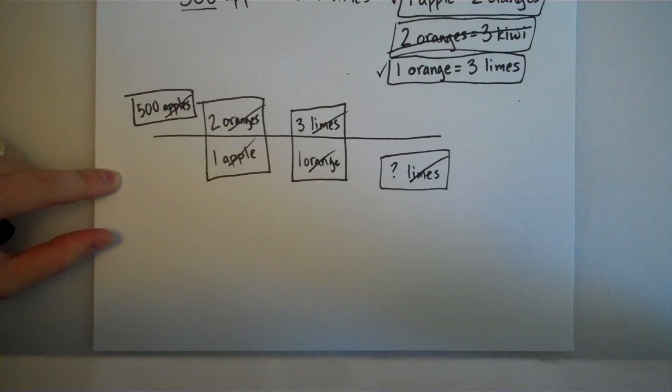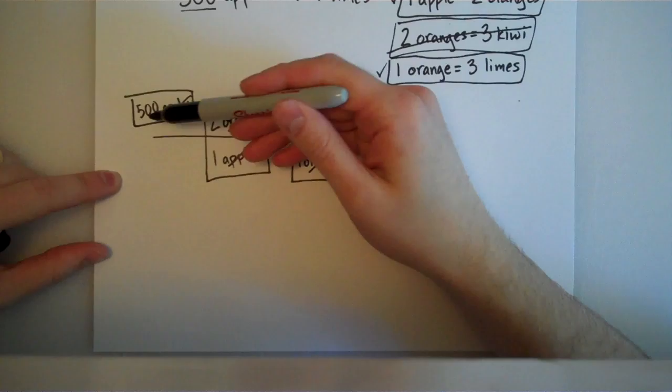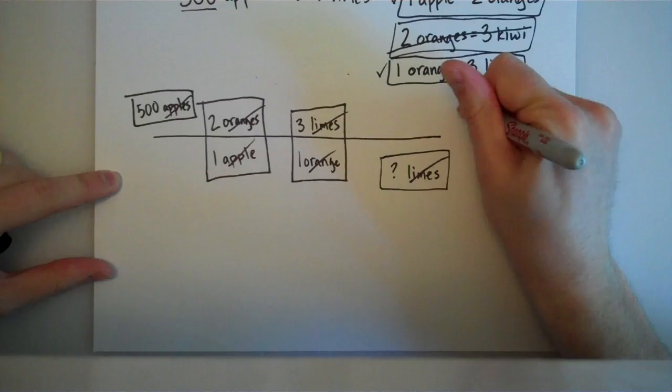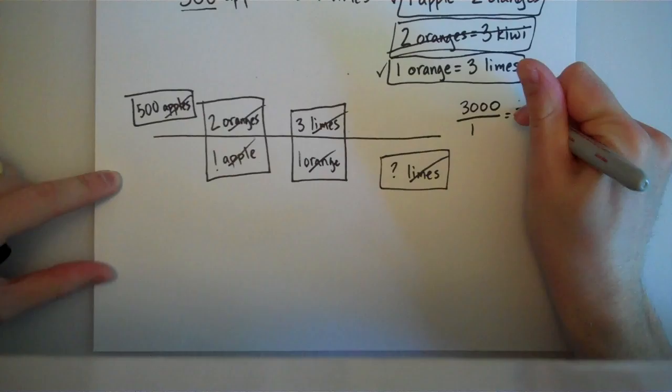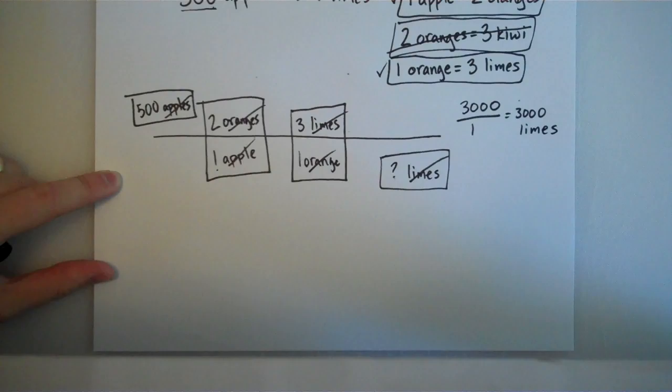Now, there are weird units, but that doesn't matter. The only thing left is I need to pull out my calculator and go ahead and do some multiplication and division. So, 500 times 2 is 1,000, times 3 is 3,000. On the bottom here, 1 times 1 is 1. That means that my answer is going to be 3,000. Well, what are my units? Well, the question mark was limes, so my unit has to be limes, which means 500 apples will give me 3,000 limes.